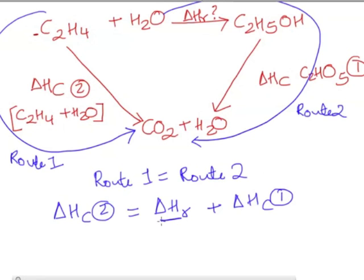Now ΔHr is our unknown parameter. So we want to rearrange this equation. So we rearrange this equation to say ΔHr is equal to ΔHc(2) minus ΔHc(1) and that will give you the answer.